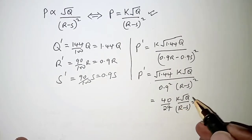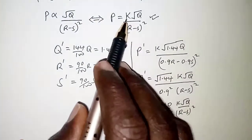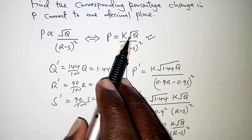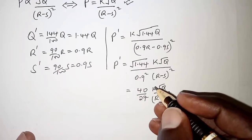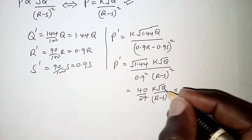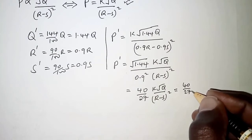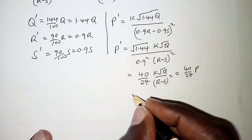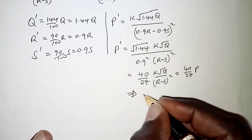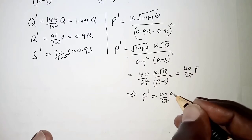But remember, K root Q over R minus S squared is already P. So we have 40 over 27 P. So for clarity, we just mean that the new value of P is 40 over 27 P.